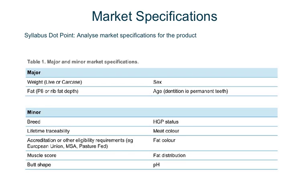Today we're going to look at market specifications for beef cattle. The syllabus dot point we're going to look at is 'analyse market specifications for the product.' In the BOSS test, 'analyse' means identify components and the relationship between them, draw out and relate implications. So in this instance we're identifying what the market specifications actually are, how they're related, and what the implications are if these market specifications aren't met.